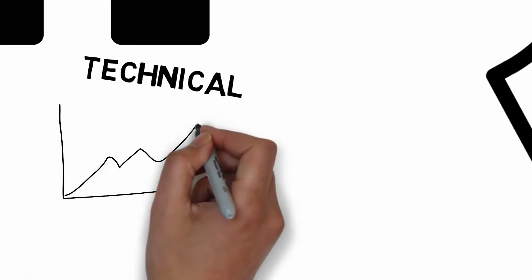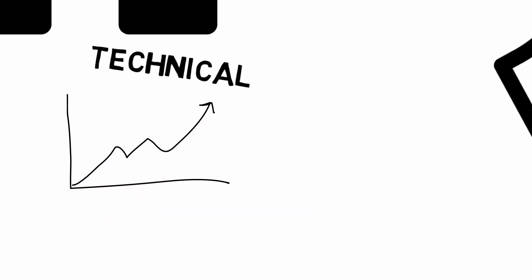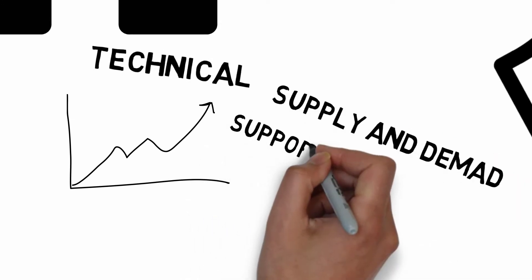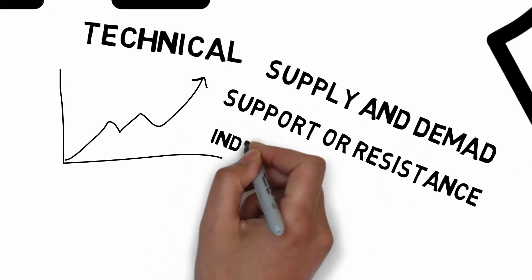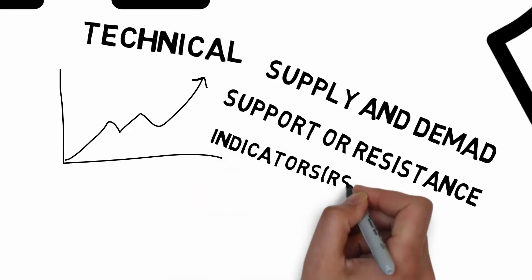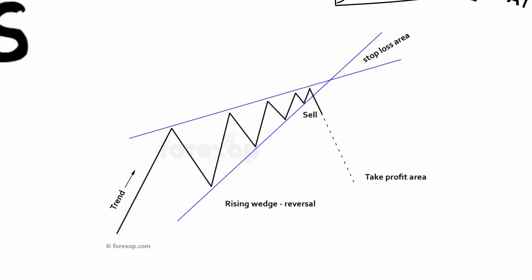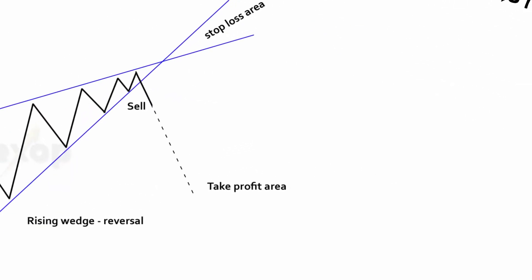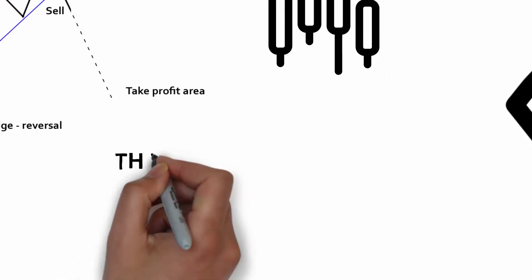Technical analysis — what's that? It's starting at a chart pattern, looking at supply and demand, support and resistance in a chart, checking indicators like RSI, stochastic orders. You do the chart work, you're looking at the candlesticks — that's technical analysis.